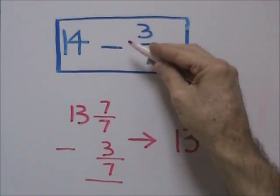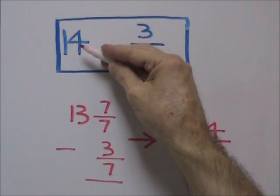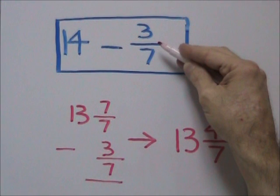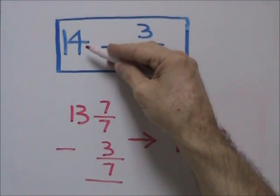In the problem 14 minus 3 sevenths, we're taking a fraction away from a whole number. That means we're taking a part of one number, the value of which is less than one whole, away from 14.